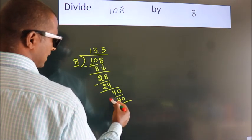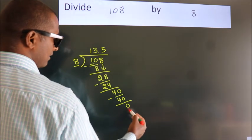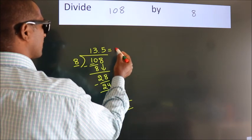Now we subtract. We get 0. Here we got remainder 0. So this is our quotient.